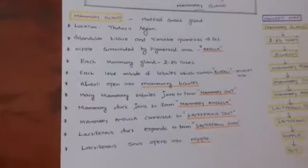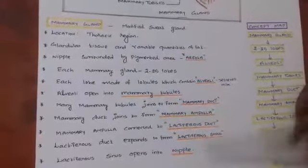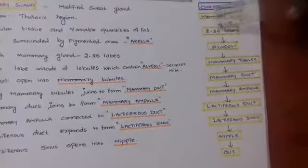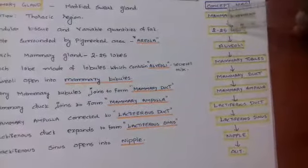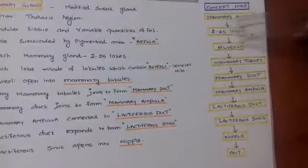Based on this description, one concept map is given for your better understanding. These are all the key words for examination. Each mammary gland contains 2 to 25 lobes. Each lobe contains lobules. Lobules contain alveoli.